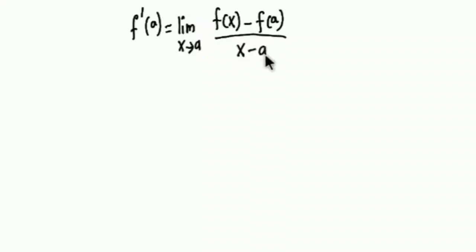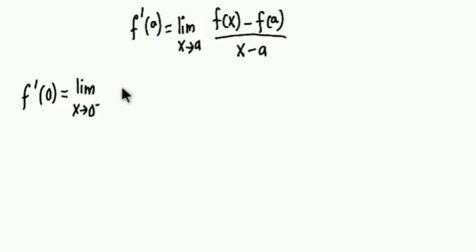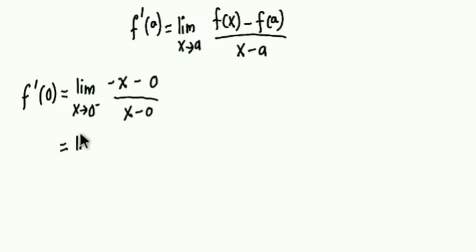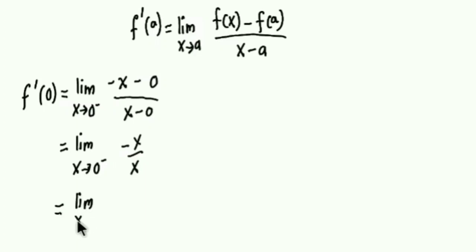We check the limit from the left and from the right. For the left-hand limit, as x approaches 0 from the left, we use the function negative x. So we compute [negative x minus f(0)] over [x minus 0], where f(0) equals 0. This simplifies to negative x over x, which equals negative 1. So the left-hand limit equals negative 1.